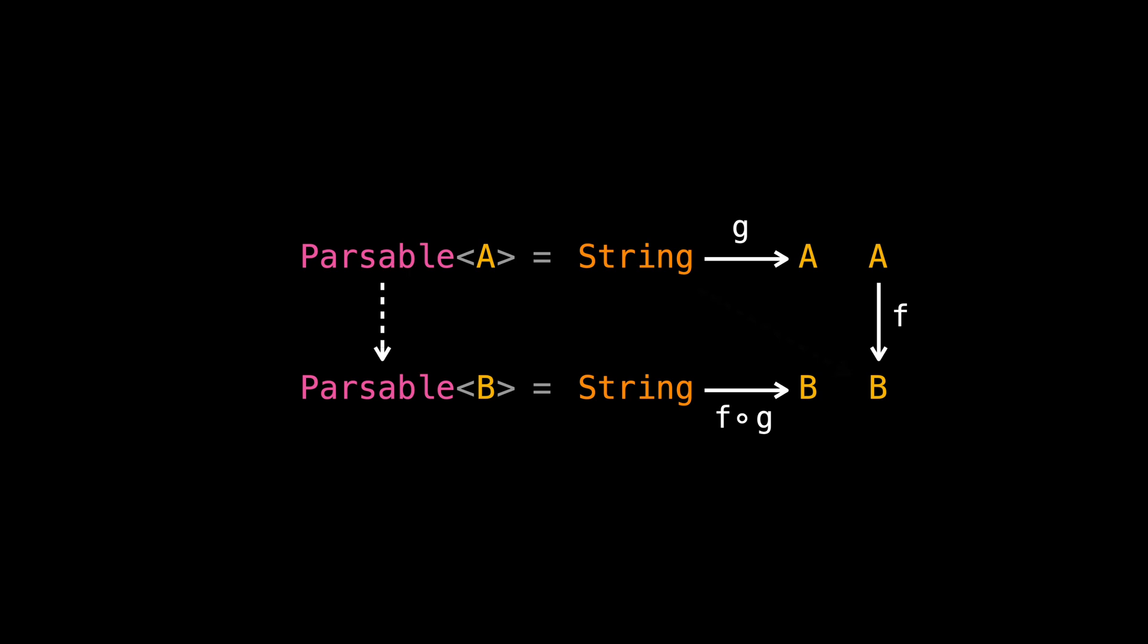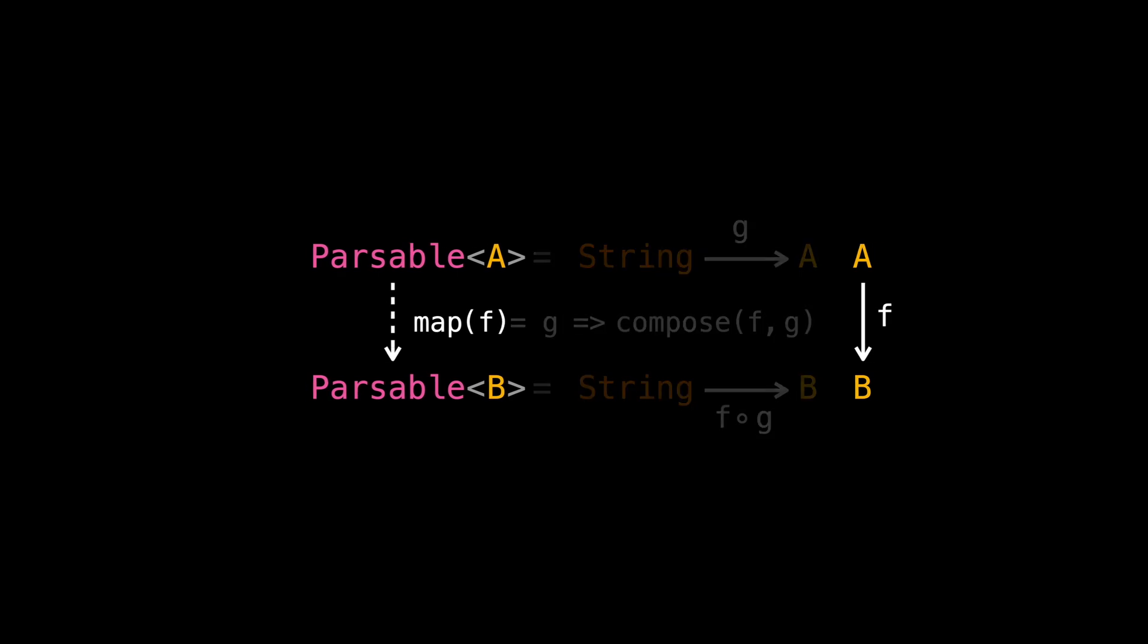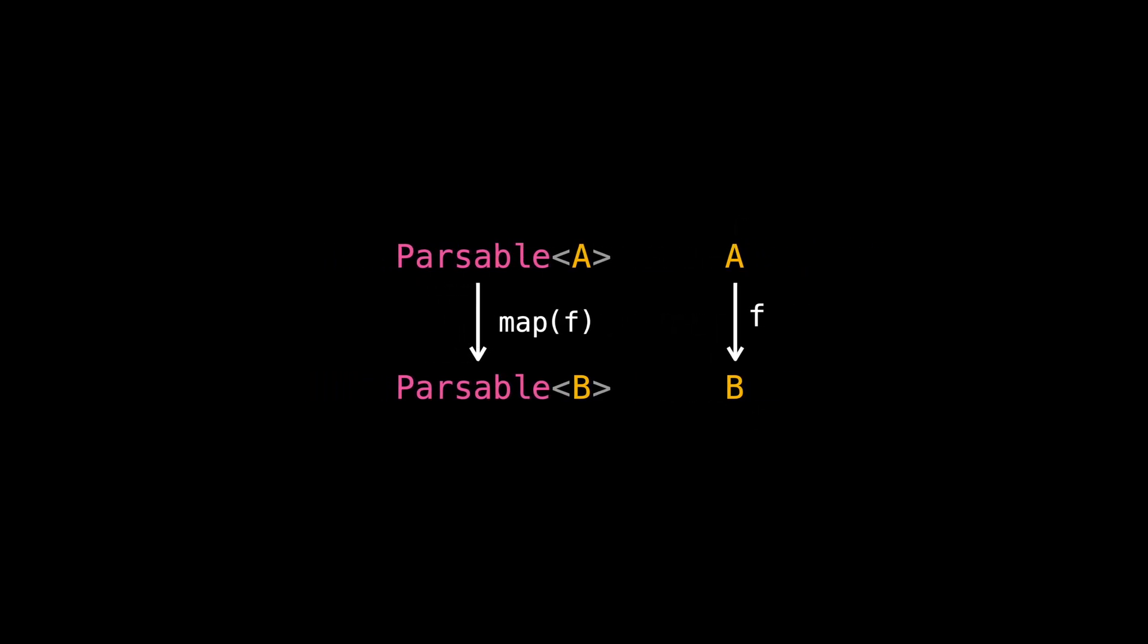Let's reiterate. In order to convert Parsable A to Parsable B, we want to define a map function that lifts F to the Parsable context. And what this map function does is it receives a value of type Parsable A which we show it with G and returns the composition of F and G which is of type Parsable B. Take a moment to fully understand what is happening here. So we found a way to lift function F to the context of Parsable structure. It means we now know how to convert Parsable structures to each other just by knowing how to convert what type they produce.